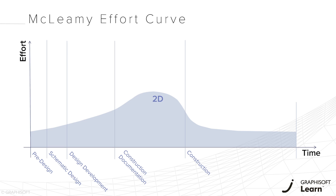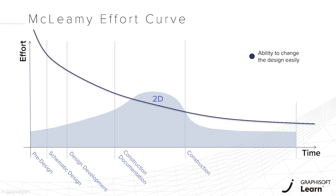The effort curve reaches its maximum at the construction documentation phase, and effort significantly reduces during the tendering and construction phase. Now let's see our ability to change the design easily. At the early design stage, we can form the building, add stories and change the overall size fairly quickly and with less effort.